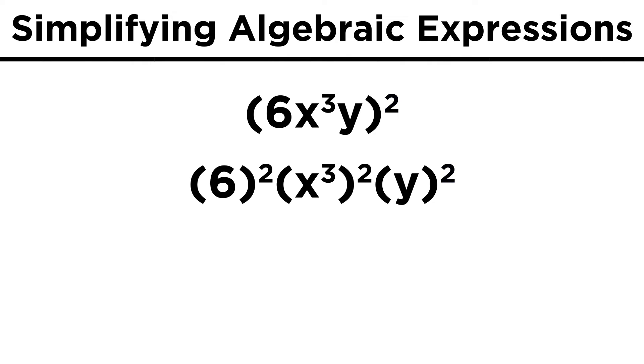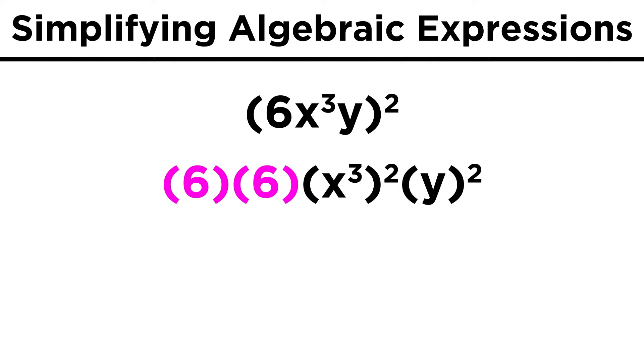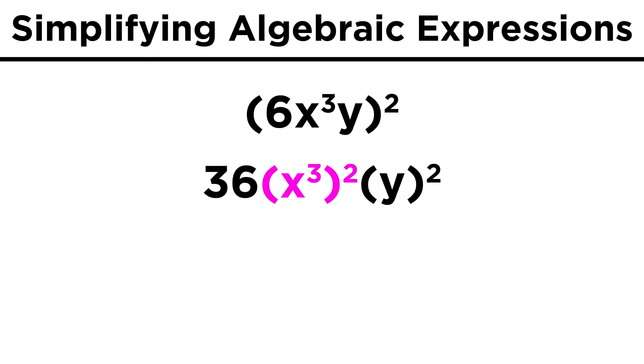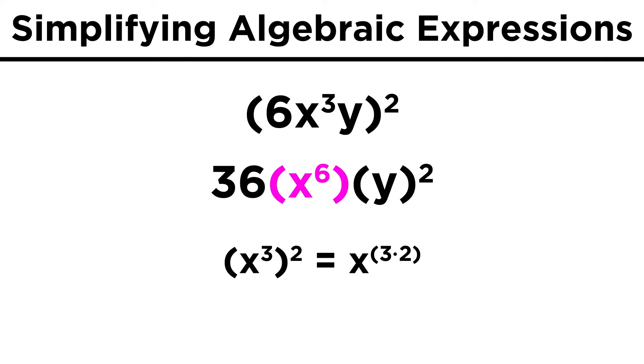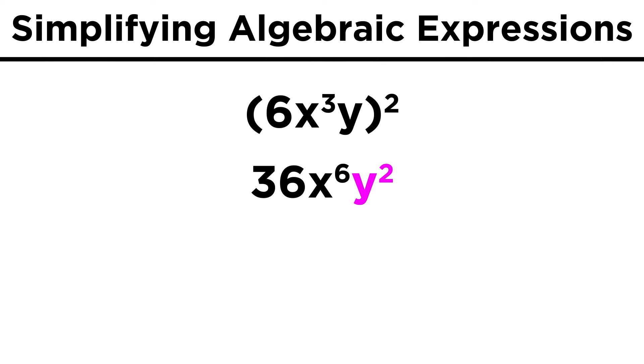Now we continue to simplify. Six squared is six times six, or thirty-six. For x cubed squared, let's remember that x to the a to the b is equal to x to the a times b, meaning that we multiply the two exponents together. That means x to the three times two, which equals six, or x to the sixth, and y squared stays as it is. So we are left with thirty-six x to the sixth y squared.